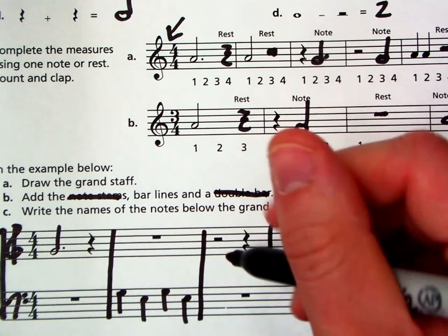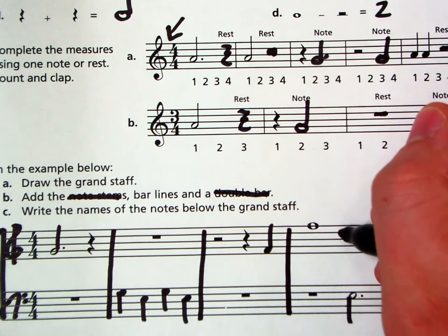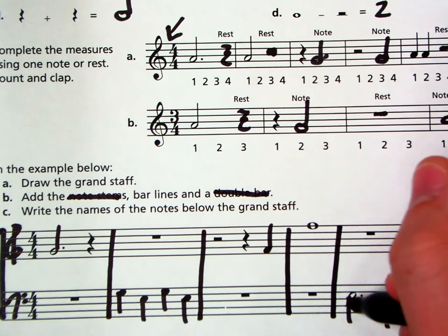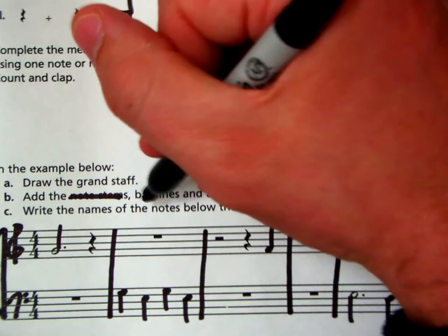So four here. And that's also a whole rest. So one, two, three, four. Whole notes and a whole rest. One, two, three, four. One, two, three, four. And then we're good. Alright. So we have the bar lines.